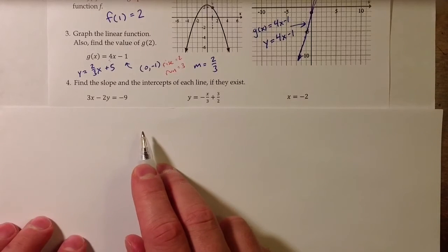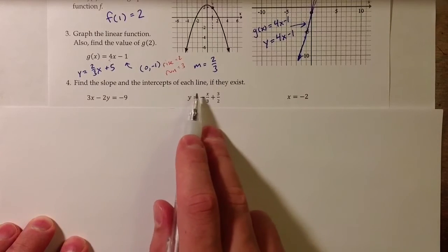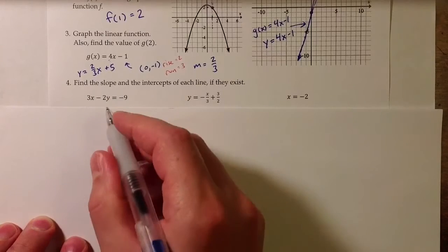Question 4 asks us to find the slope and the x and y-intercepts of each of the lines, if they exist. These things might not always exist.